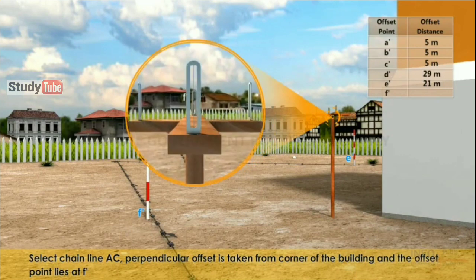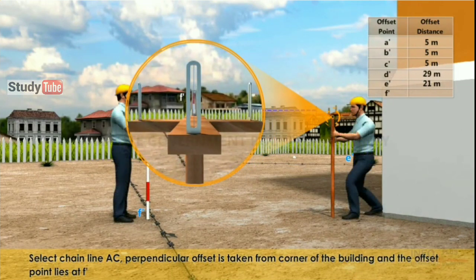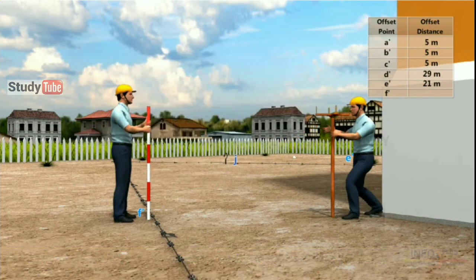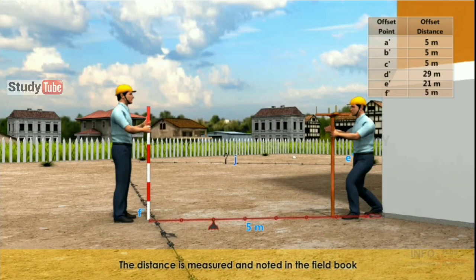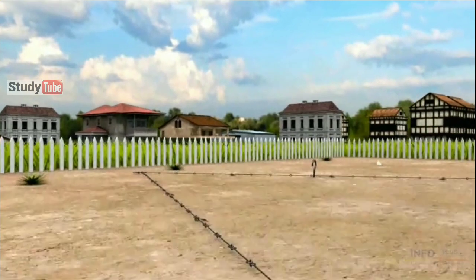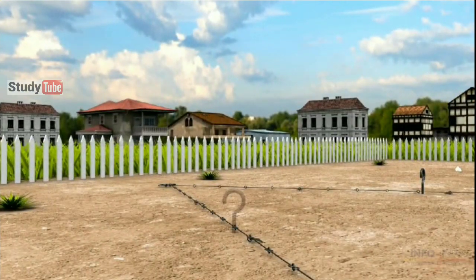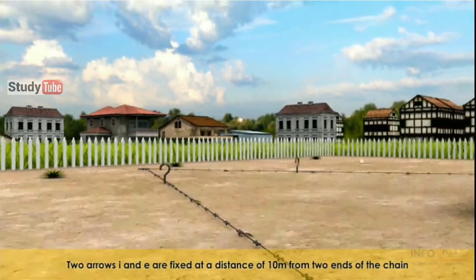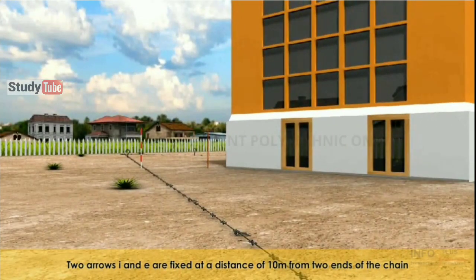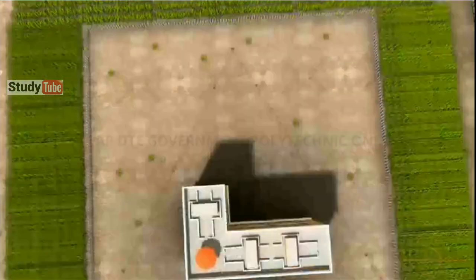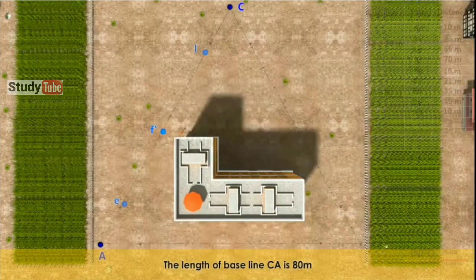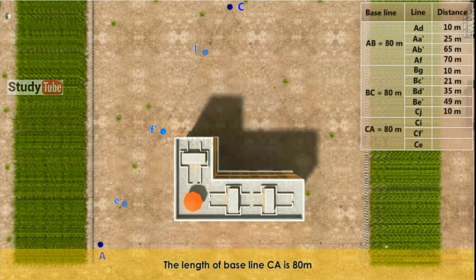Chain line AC is selected. A perpendicular offset is taken from a corner of the building and the offset point lies at F'. The distance is measured and noted in the field book. Two arrows I and E are fixed at a distance of 10m from the two ends of the chain. The length of the baseline CA is 80m.